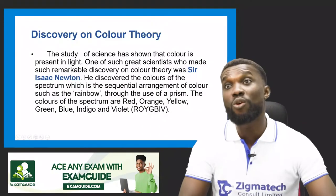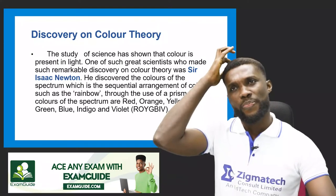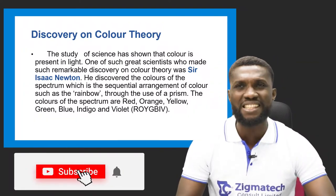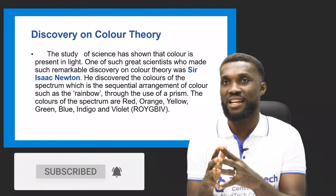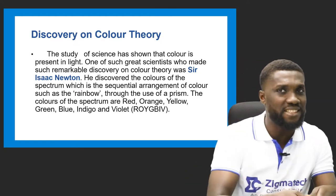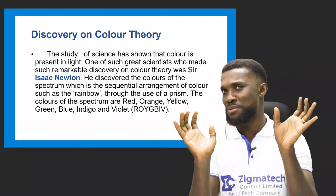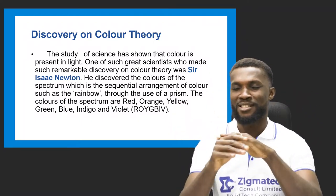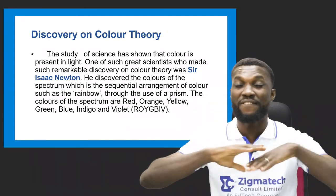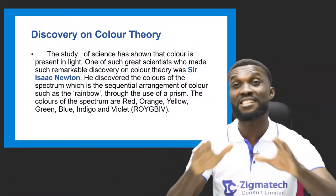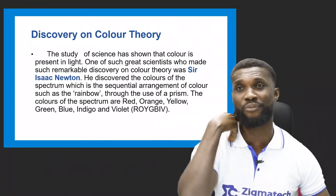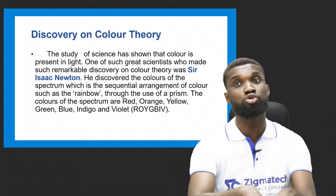Now let's look at the discovery on color theory. The study of science has shown that color is present in light. This means the absence of light is the absence of color — there is no light, there is no color. If you close your eyes, light is not entering through your eyes, so everything is black, it's just dark. But if you open your eyes, light comes in and you see color reflected.